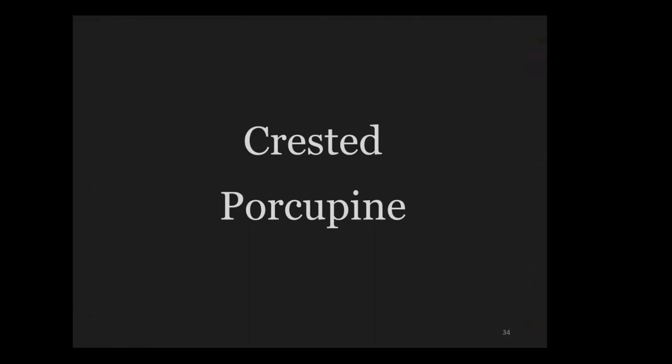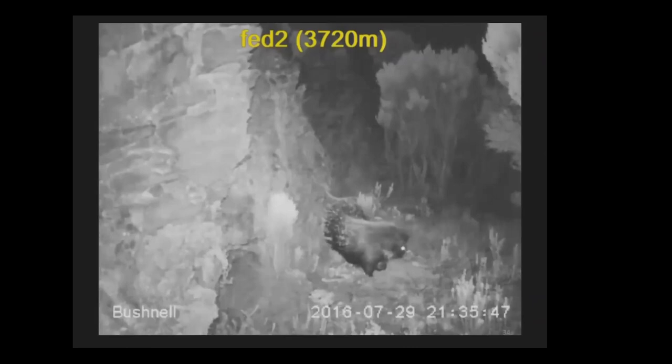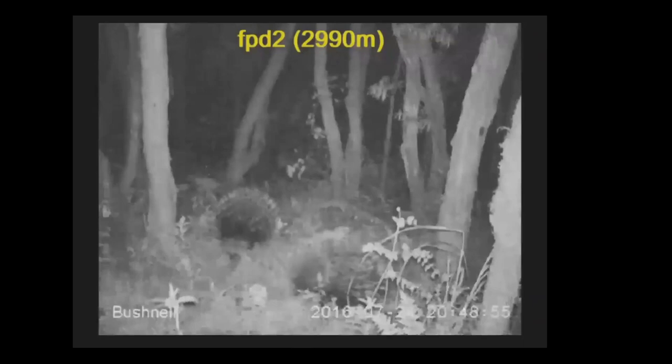The crested porcupine is a rodent covered in black and white spines, with a prominent crest of elongated spiny hair from head to shoulders. It's a solitary forager, but they live in small family groups consisting of adult pairs and their young. Here you can see an adult pair.